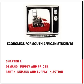You are watching Econom Tier 4, the unofficial broadcaster of economics for South African students. In today's episode we are looking at chapter 7, which is about demand, supply and prices. This is part 4 of 4 and we are focusing on demand and supply in action and how prices are determined.